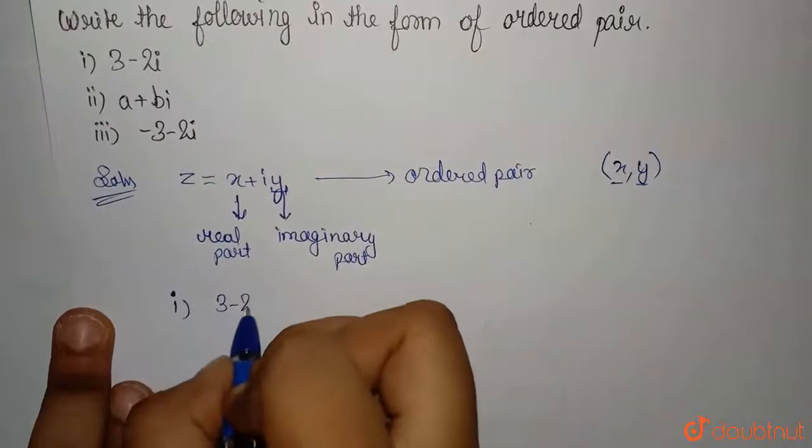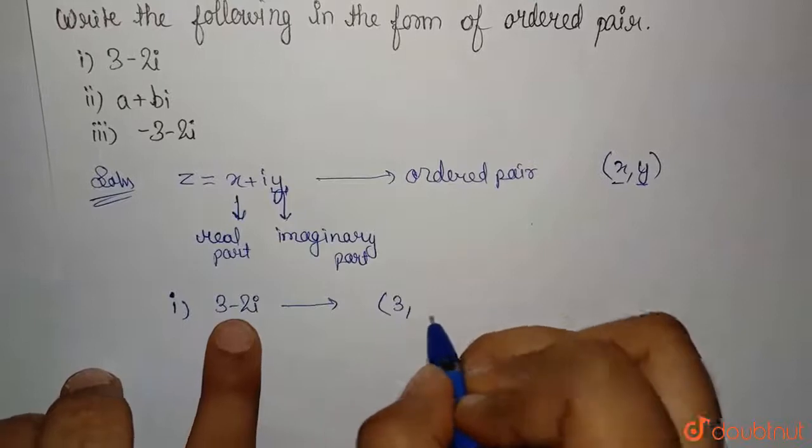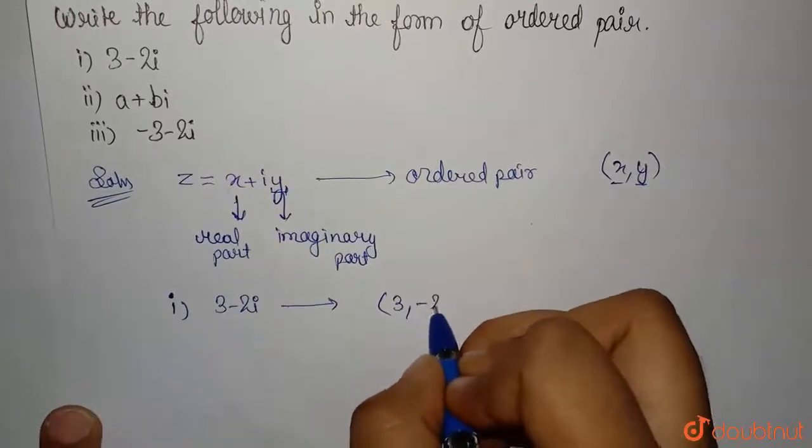First is 3 minus 2i. If you write it in the ordered form, you have the real part to be 3 and the imaginary part to be minus 2.